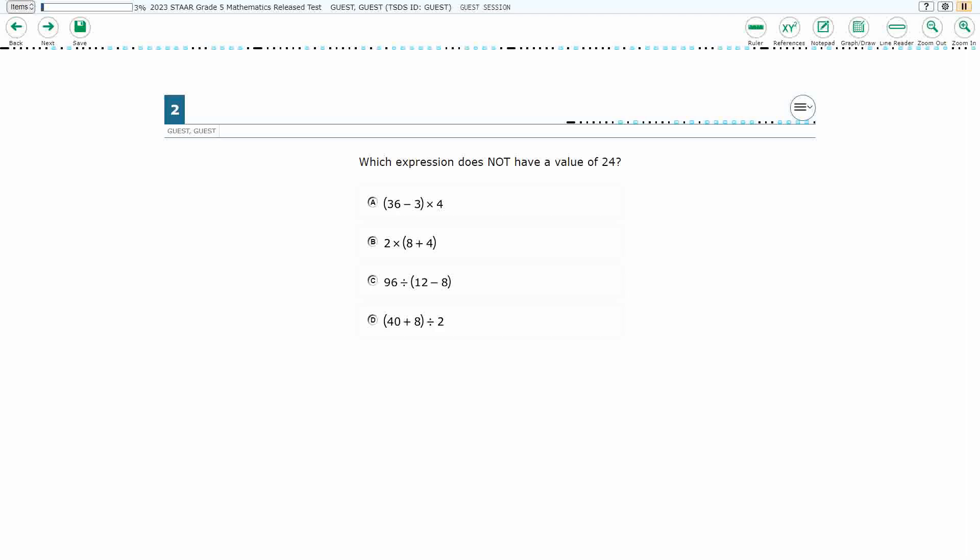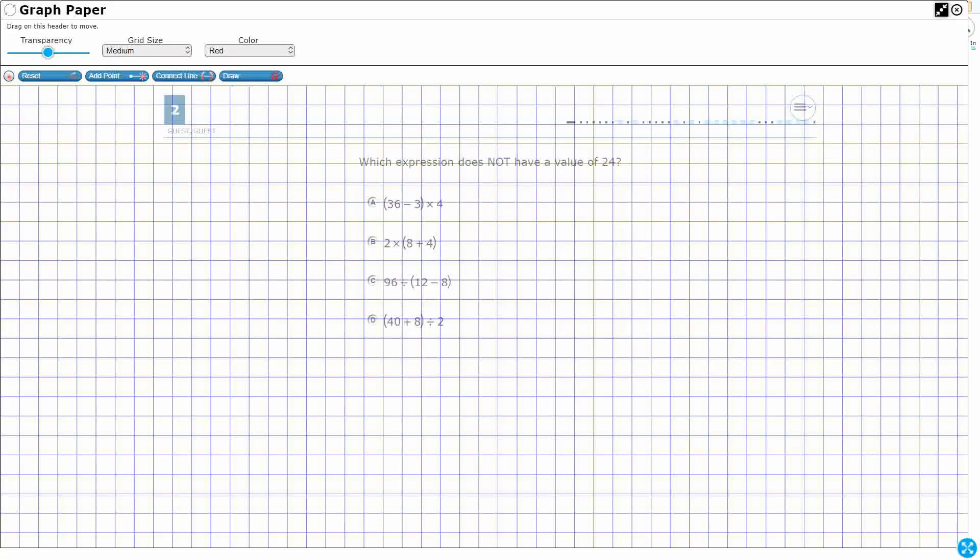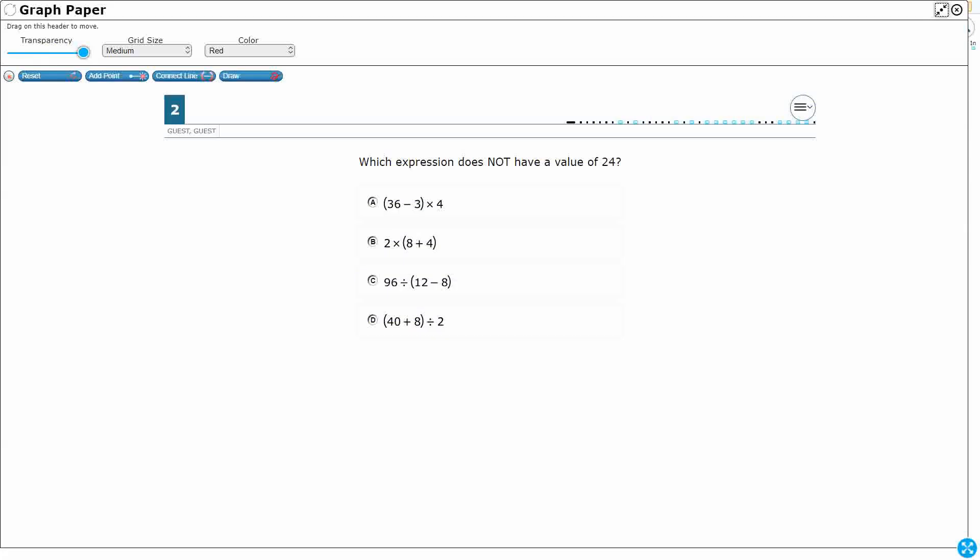So we've got four expressions here. Remember, an expression is just a value, can include operations. It does not have an equal sign. So these are all expressions rather than equations because there are no equal signs.